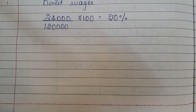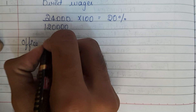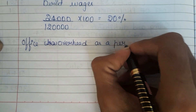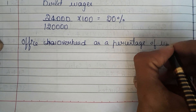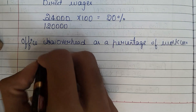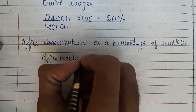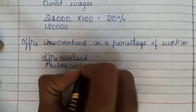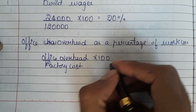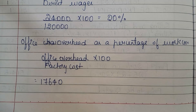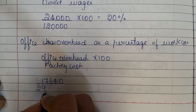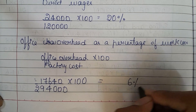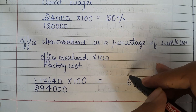Next, they have told to charge office overhead as a percentage of work cost. So the formula is: office overhead (administration overhead) divided by factory cost, multiplied by 100. Administrative overhead is 17,640 and factory cost is 2,94,000, so 17,640 divided by 2,94,000 into 100 gives 6%.